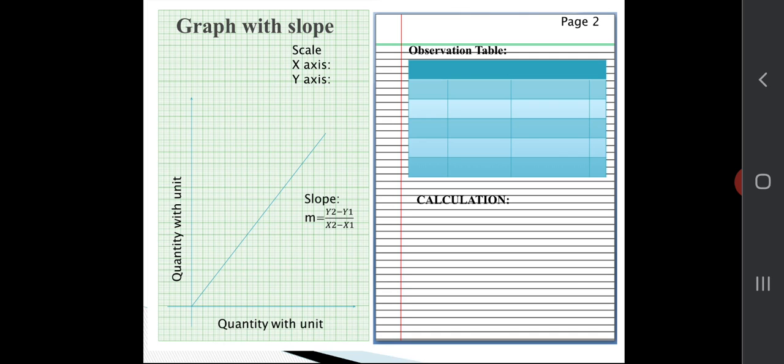Now come on to the second page. On the second page, you will draw the observation table and you will perform some calculations. While performing some calculations, you should write down the formula and just put up some values for that purpose. The calculation, if they ask to do sample calculation only, so this calculation you can do only for the first reading.